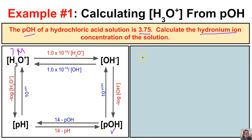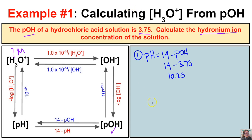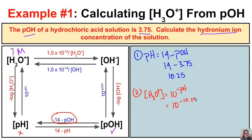We know the pOH is 3.75, so in our first step we determine the pH by taking 14 minus the pOH: 14 − 3.75 = 10.25. But this is not our final answer. In the second step, we find the hydronium ion concentration by taking 10 to the negative pH, which is 10⁻¹⁰·²⁵, and we end up with 1.78×10⁻⁴ moles per liter.